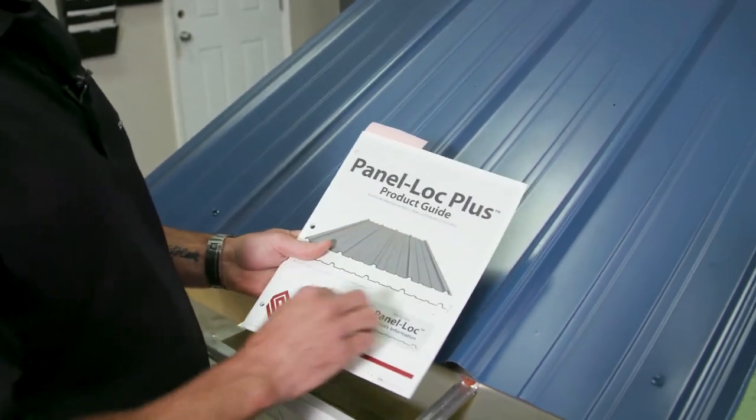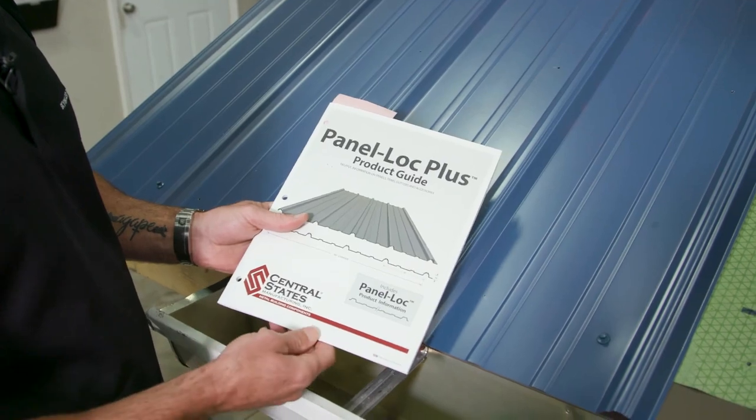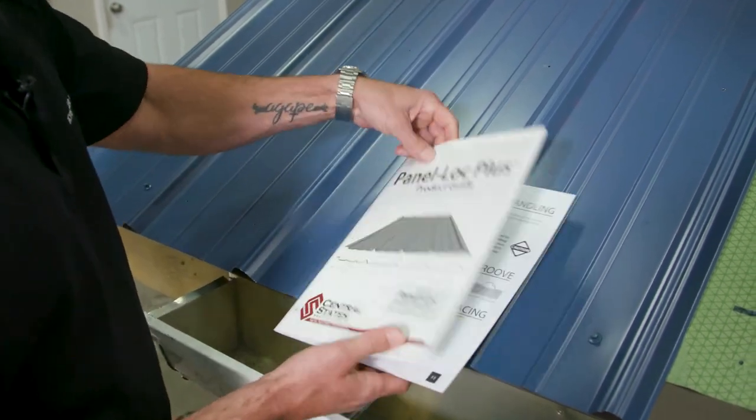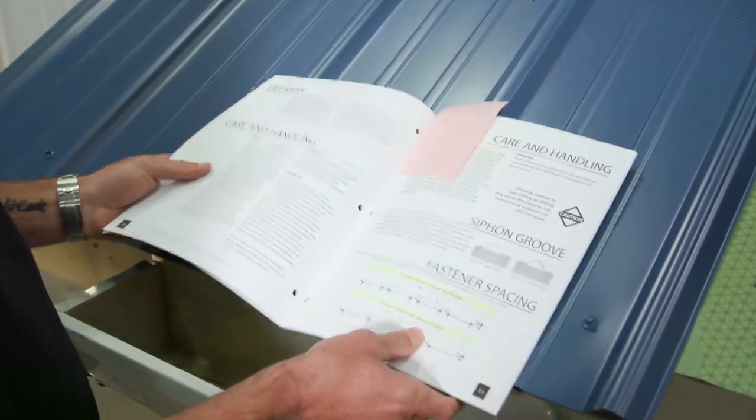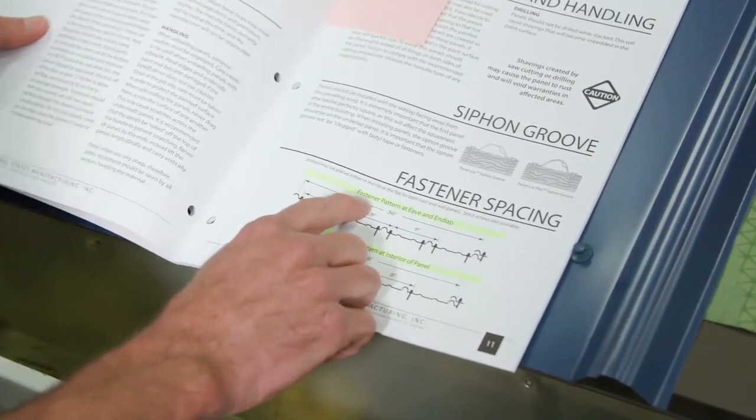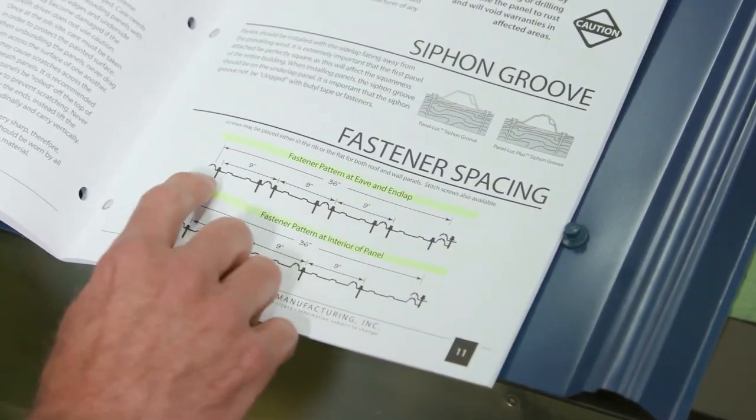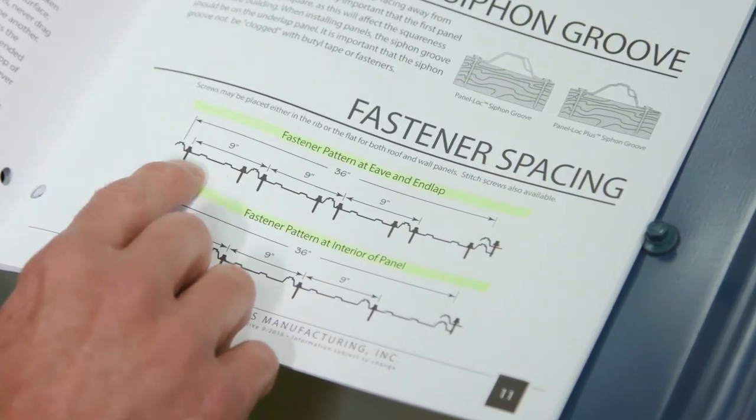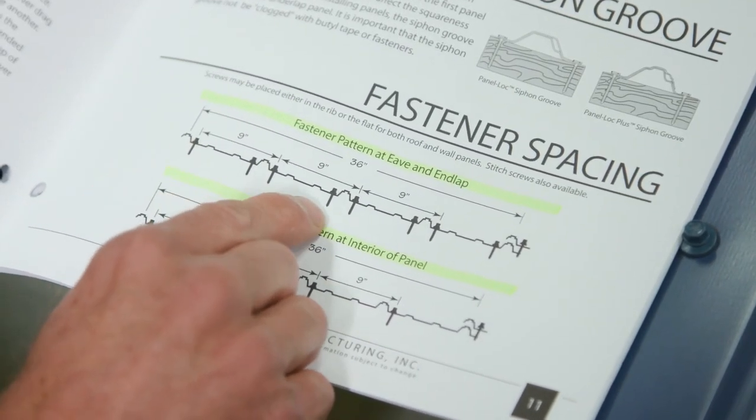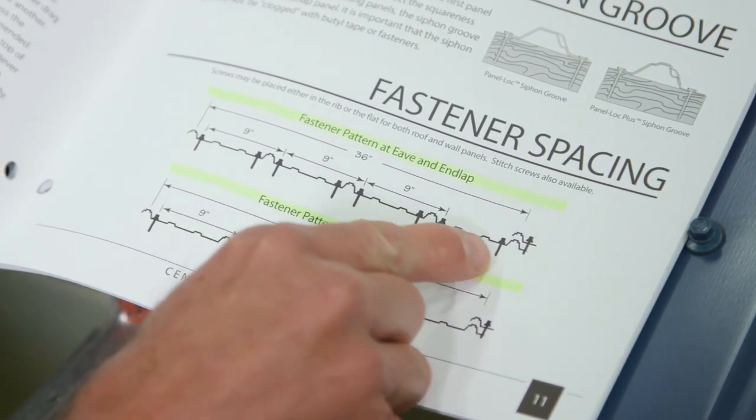I've got three examples of our manufacturers. This is central state manufacturing. I'm going to go over here to the fastener spacing diagram. Fastener pattern at eave and end lap. You can see here, each screw is placed right beside the rib all the way across.